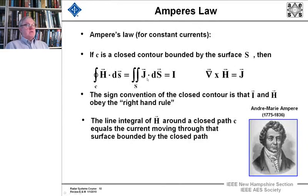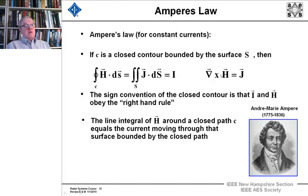Now on to Ampere's law for constant currents. If a closed contour is bounded by a surface, the path integral — the line integral — over that closed contour of the magnetic field intensity is equal to the surface integral of the surface current density, which equals the current. Its differential equivalent is that the curl of the magnetic field equals the current density. The directions obey the right-hand rule: the line integral of H around a closed path C equals the current moving through the surface bounded by the closed path.